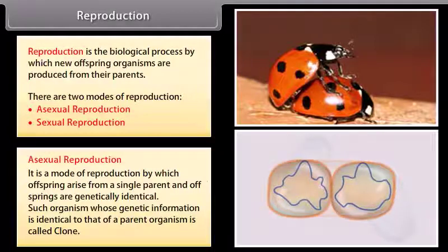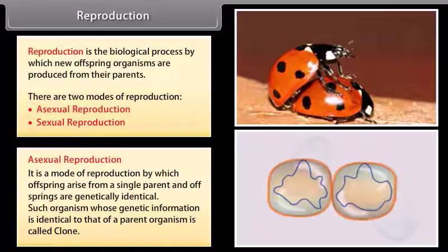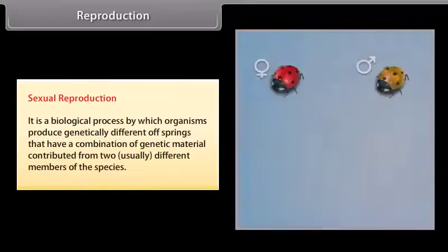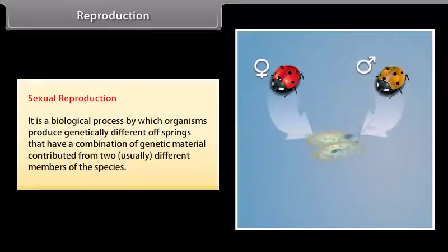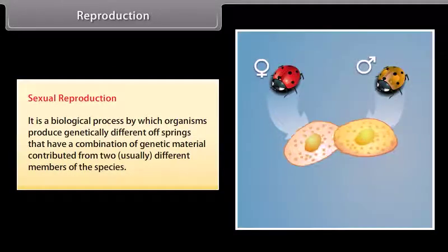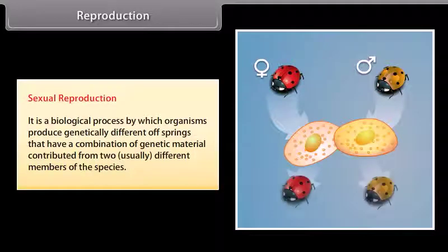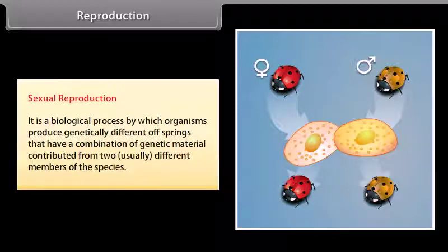Such organisms whose genetic information is identical to that of a parent organism are called clones. Sexual reproduction is the biological process by which organisms produce genetically different offspring that have a combination of genetic material contributed from two usually different members of the species.